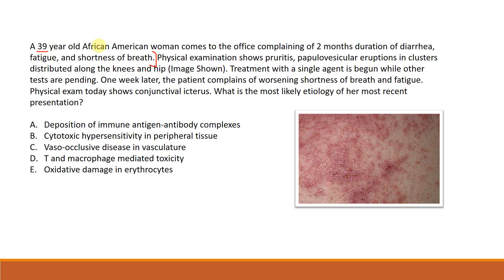The age is important — she's 39 years old, a female of reproductive age, which has specific associations with autoimmune pathologies. She's also African-American. Whenever a question tells you the race or ethnicity, it's usually because there is a disease association with that population.